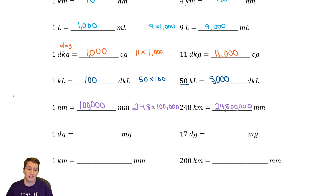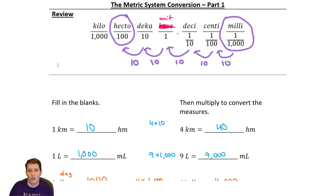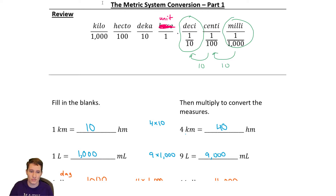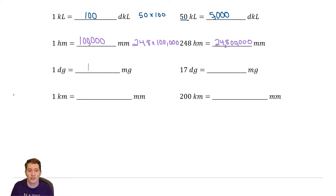Let's do this next one: one decigram and milligrams. These are closer together. Decigram and milligram — we need to go one spot, two spots. So 10 times 10, which is 100. There are 100 milligrams in one decigram. So if there are 100 milligrams in one decigram, how many are in 17 decigrams? 17 times 100 gives us 1700.